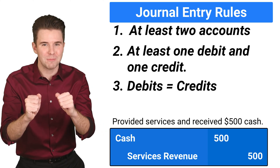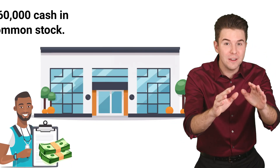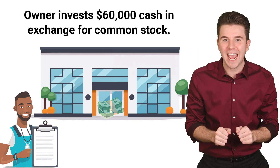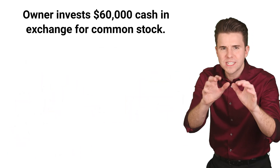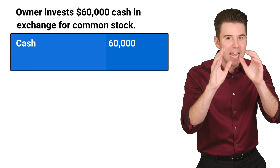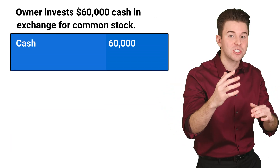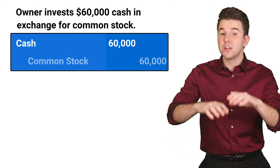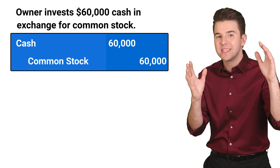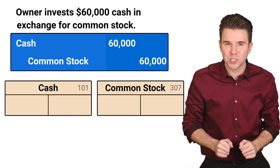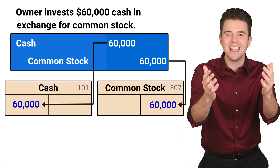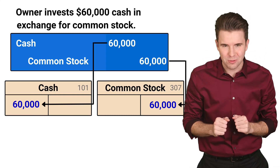So I think we're ready for some more examples. Let's assume a fitness training business is just starting and the owner invests $60,000 cash in exchange for common stock. To record this entry, we debit and increase cash for $60,000 and credit and increase common stock for $60,000. We also see that after recording the entry, we post the entry to the ledger accounts.